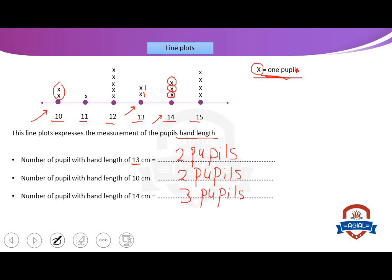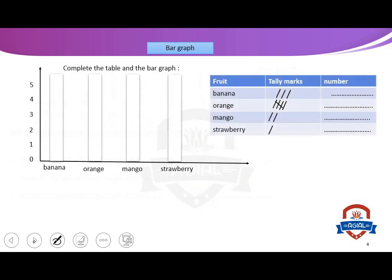Is this easy? Number two — bar graph. Remember with me, bar graph. In a bar graph we use tally marks and numbers. We have a horizontal line and a vertical line. You remember? Horizontal line goes left and right, and the vertical line goes up and down.